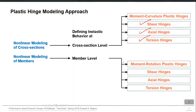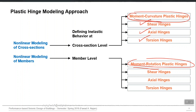For moment, there are two types of hinges: moment versus rotation, and moment versus curvature — depending on whether you want to define non-linearity at the full member level or cross-section level. If you want to define non-linearity at the whole member level, use the moment-rotation hinge. These different types of hinges are available in ETABS and Perform-3D.